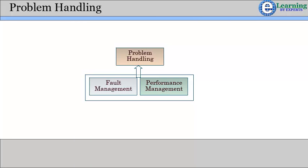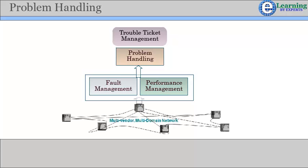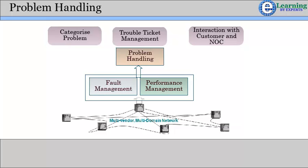The problem handling system helps in initiating, tracking, and closing trouble tickets. These trouble tickets can be either network-driven or customer-driven. Network-driven trouble tickets are generally raised through the fault management system, whereas customer-driven trouble tickets are raised either through telephone, email, or web.